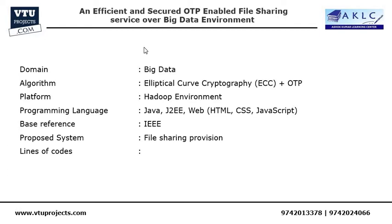We will create an ability for the data owner to revoke access at any point in time — so if you don't want to share that file with a user anymore, you will be able to revoke it. The OTP will be dynamic, so every time the user accesses the file the OTP will be changing. There are many other features we are going to implement on our own.